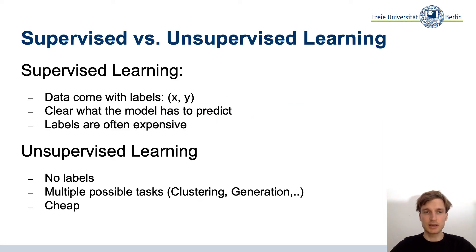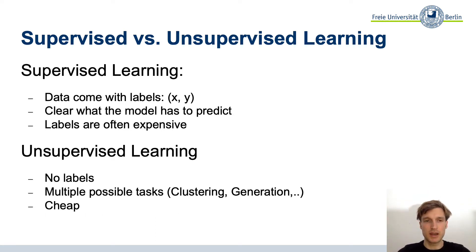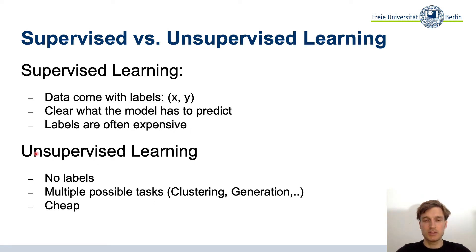Let's start by categorizing machine learning models. We talked about supervised learning before. Supervised learning is when we have labels, so we have pairs x and y that we train with, and we try to map these pairs to the label. We have a clear objective of how to do that, and the problem here is that labels are often very expensive.